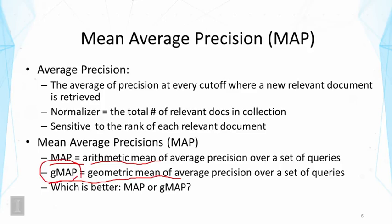Once you think about two different ways of doing the same thing, the natural question is: which one is better? Do you use MAP or GMAP? Imagine you are testing a new algorithm by comparing it with your old algorithm in a search engine. You tested multiple topics and got the average precisions for all of them. Now you are thinking about looking at the overall performance. Depending on the way you average, you will get different conclusions.